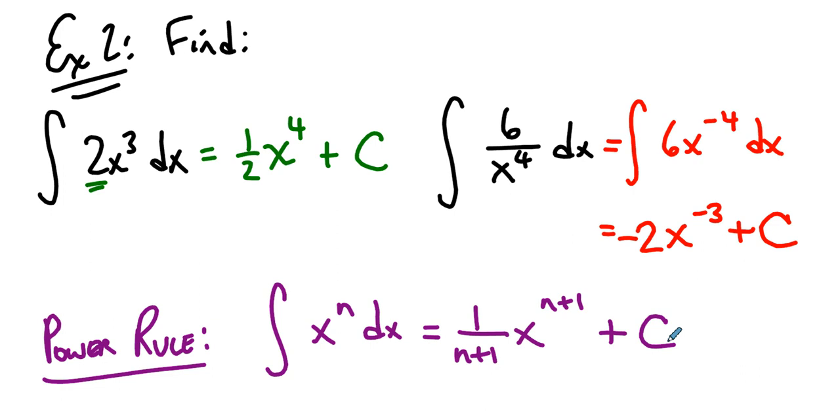So the way we think about this, we increase the power by 1 and divide by that power. We increase 3 by 1 to get 4 and divide by 4. 2 divided by 4 is 1 half. We increase the power by 1 and divide by that new power. 6 divided by negative 3 is this negative 2.